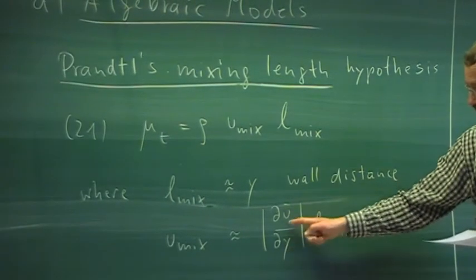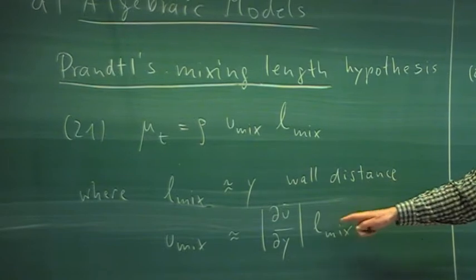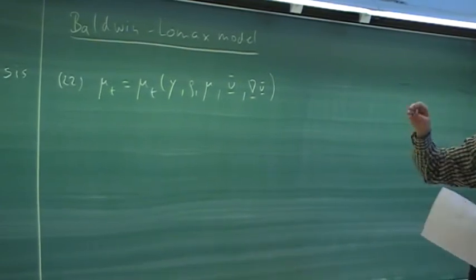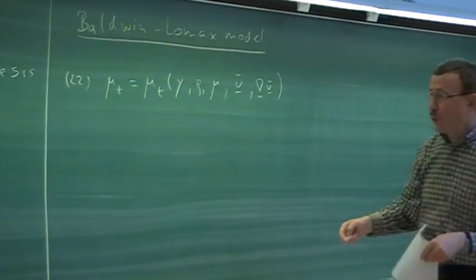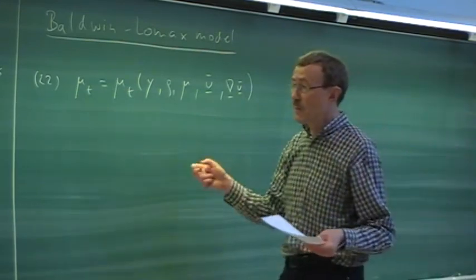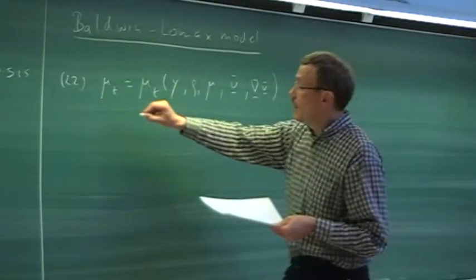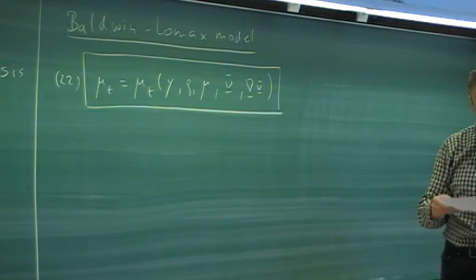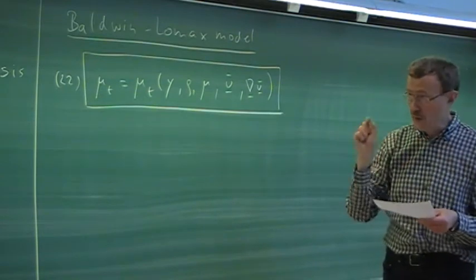This gives us a velocity divided by a length, multiplied by the length to get a velocity. By Prandtl's idea, it is essentially a velocity difference from higher or lower positions over this length — a velocity scale and a length scale. This boils down to purely algebraic relations; we don't need to solve a PDE. Approximation 20 (the Boussinesq approximation) is also used with the Spalart-Allmaras model.